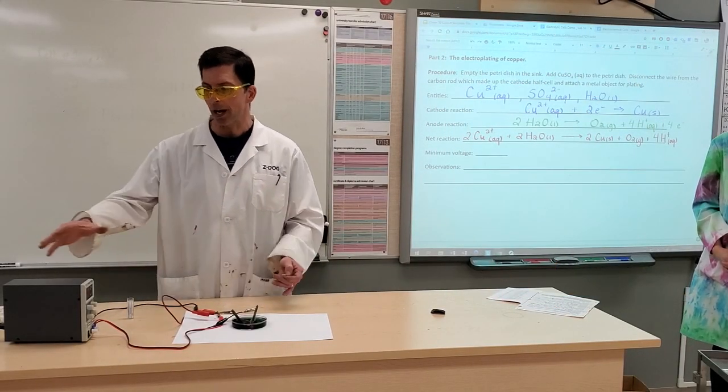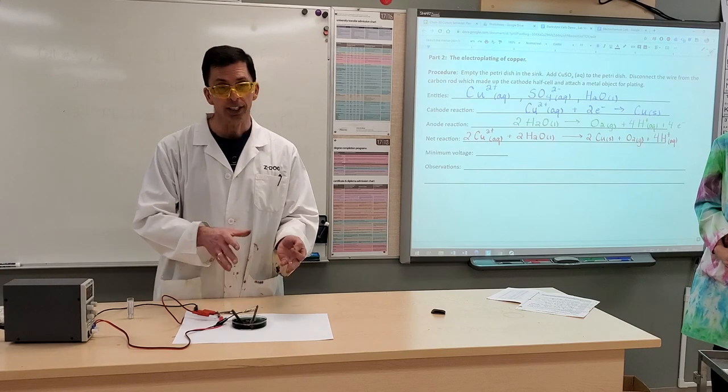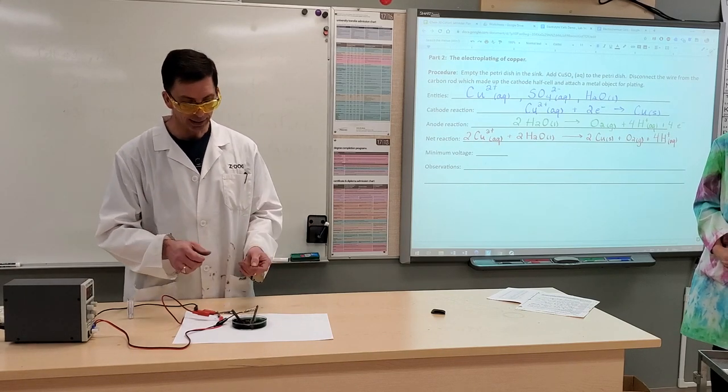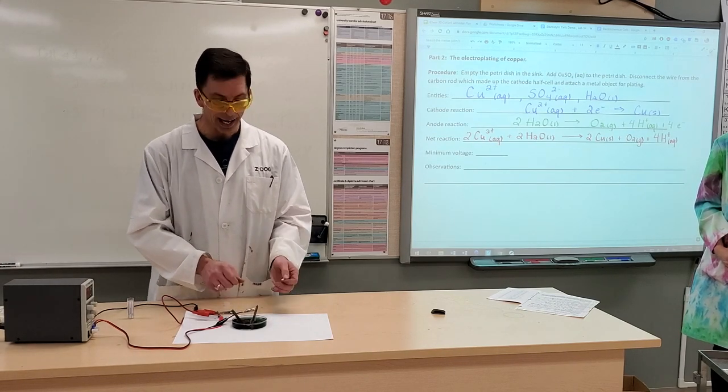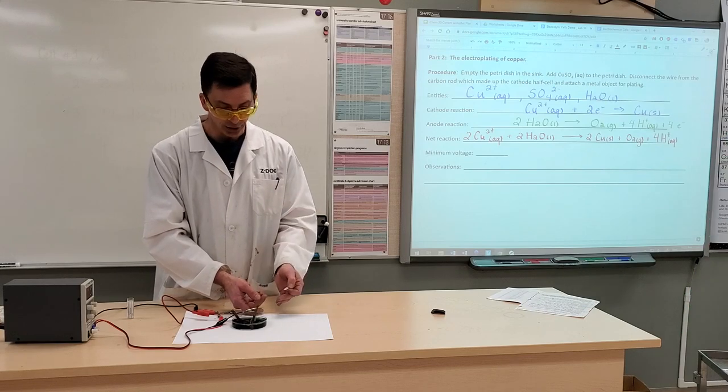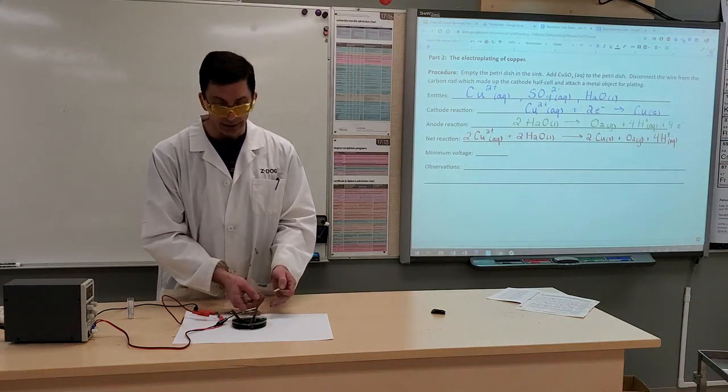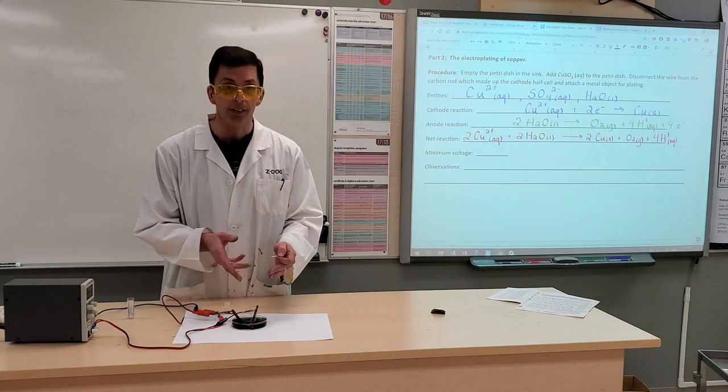So to wrap up, to summarize, we have a power supply putting energy into this system. It's an electrolytic cell. At our cathode, reduction is occurring. Our cathode is labeled negative here in this cell.